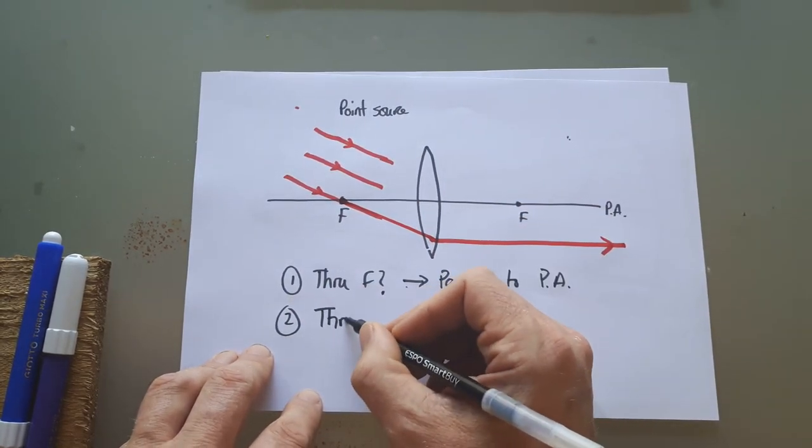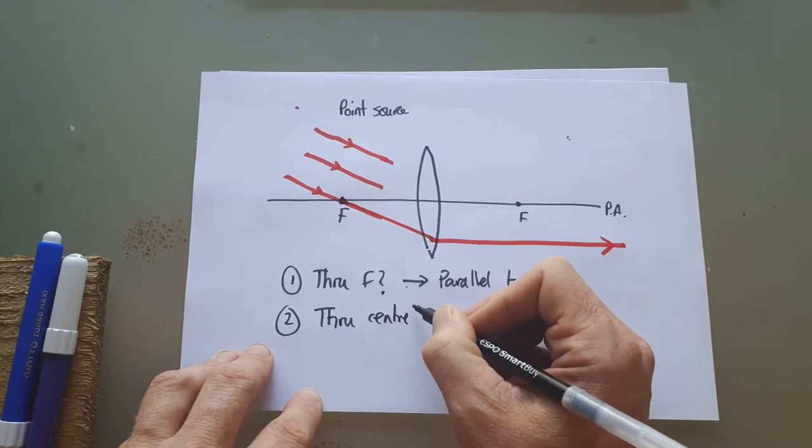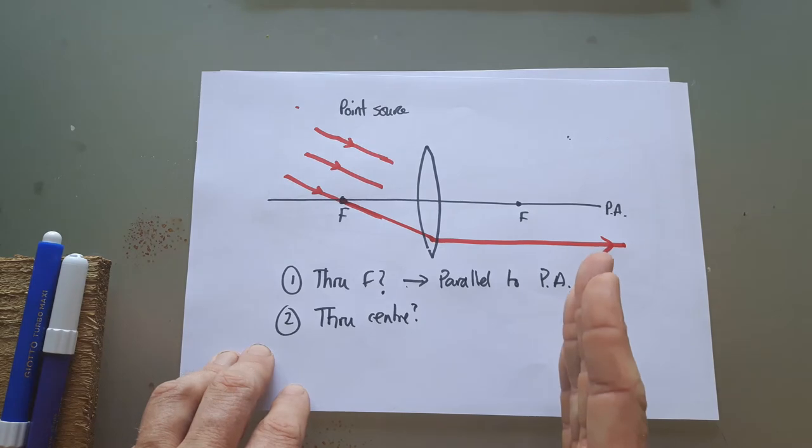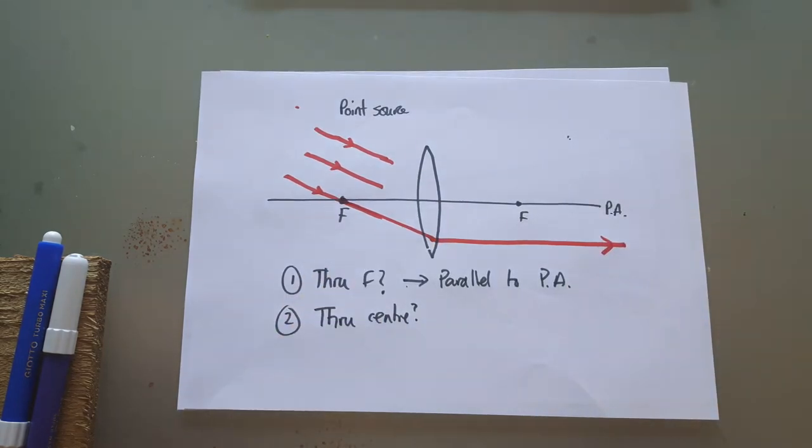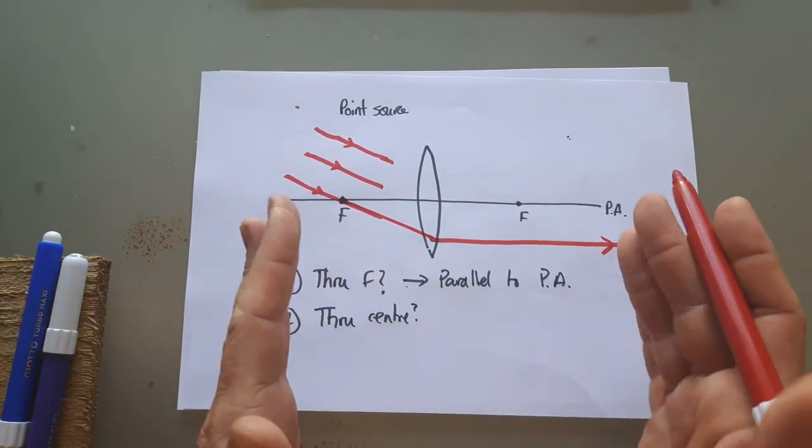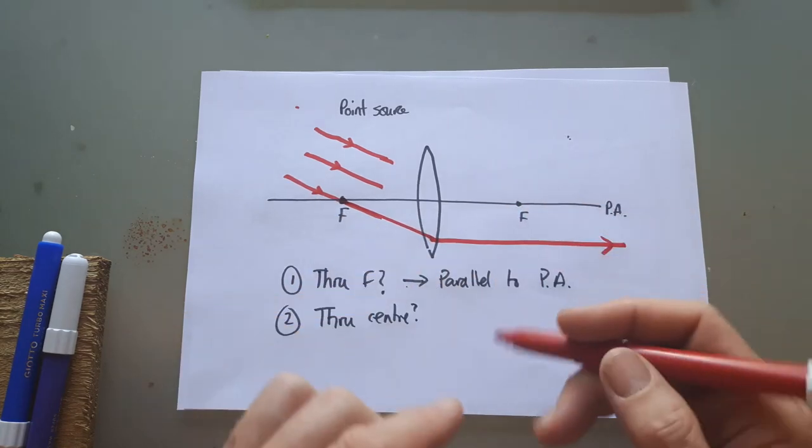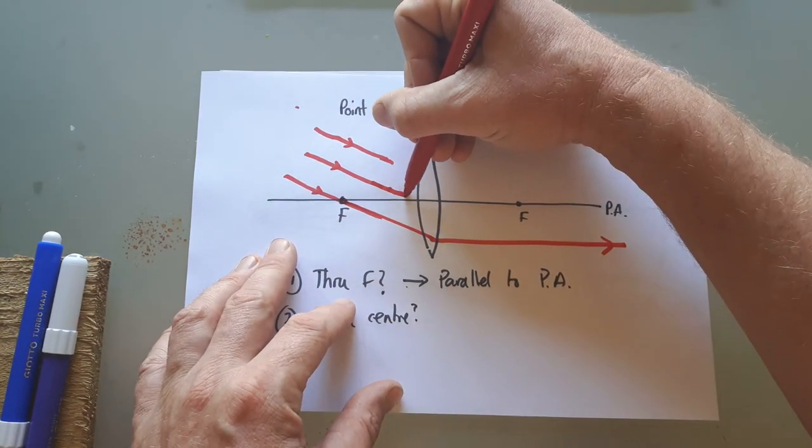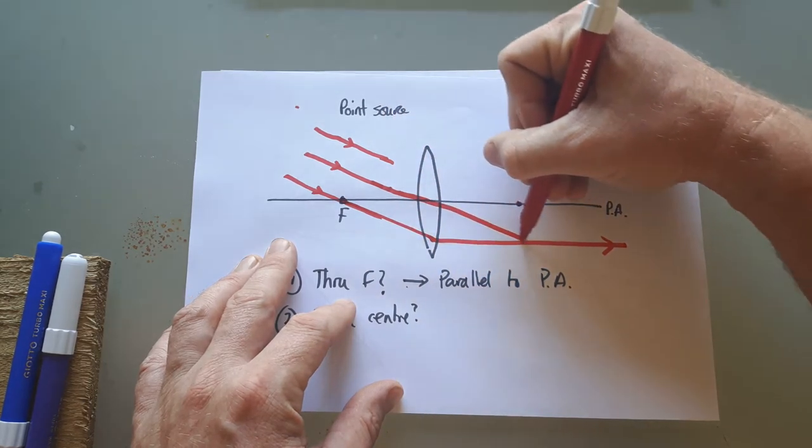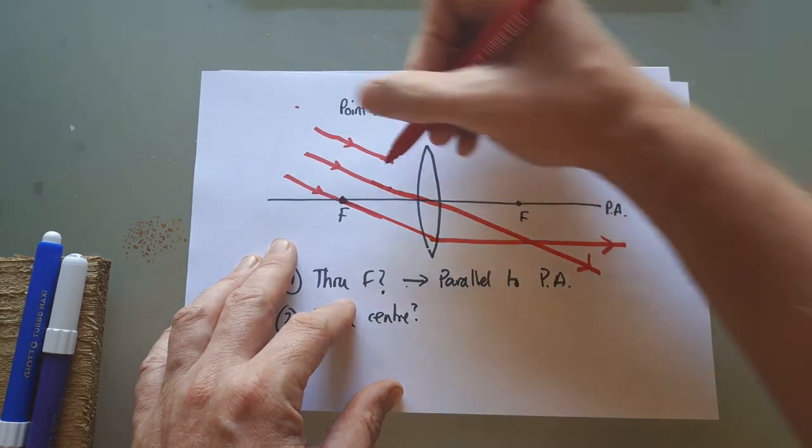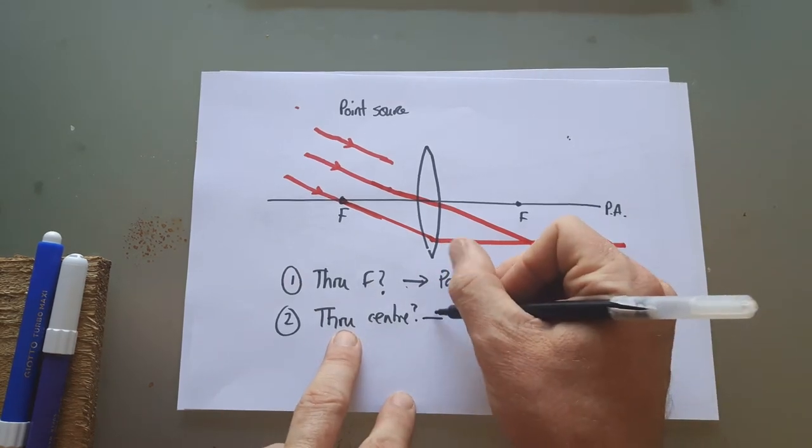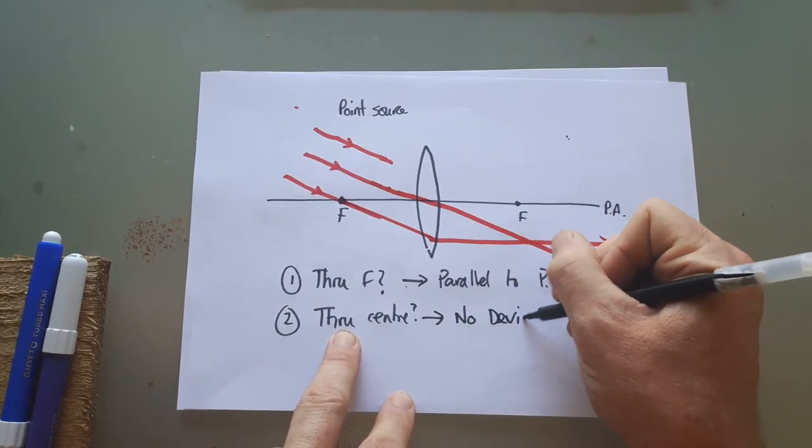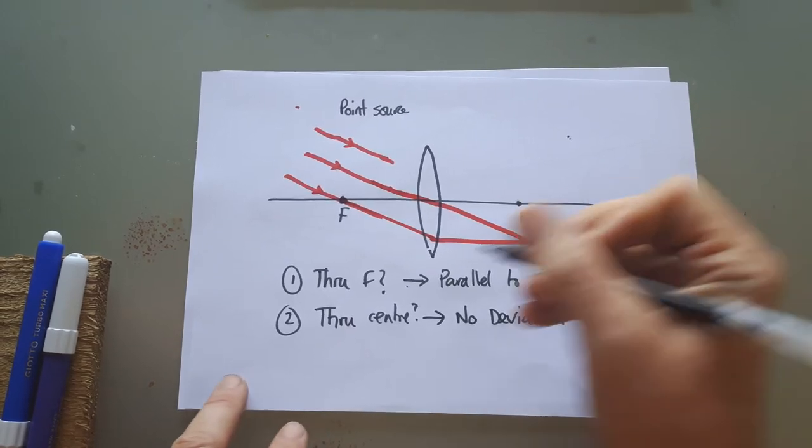Number two is if it goes through the center of the lens. The very center of the lens is actually perfectly flat, just like a glass rectangular prism, so the rays that go through the middle do not deviate, so carry on going in a straight line. If it goes through the center, no deviation.